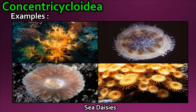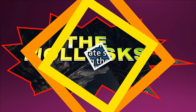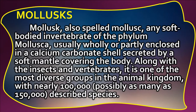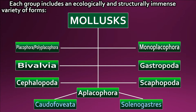Molluscs — also spelled mollusks — are any soft-bodied invertebrates of the phylum Mollusca, usually wholly or partly enclosed in a calcium carbonate shell secreted by a soft mantle covering the body. Along with insects and vertebrates, it is one of the most diverse groups in the animal kingdom, with nearly 100,000 — possibly as many as 150,000 — described species. The classes include Aplacophora, Polyplacophora, Monoplacophora, Gastropoda, Bivalvia, Scaphopoda, and Cephalopoda.